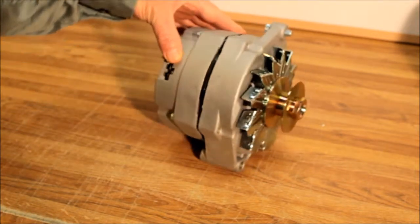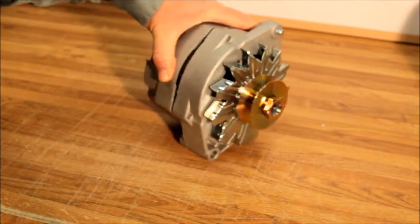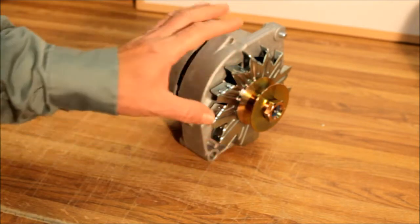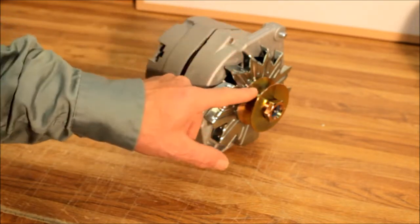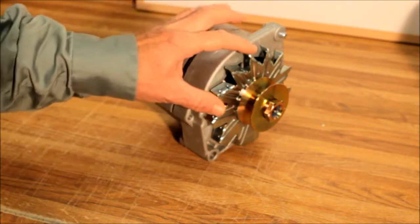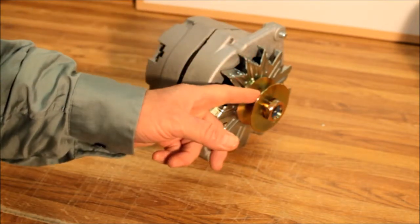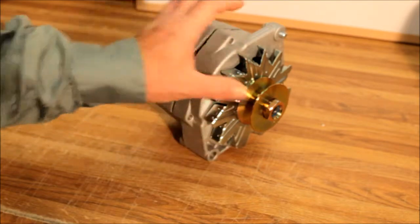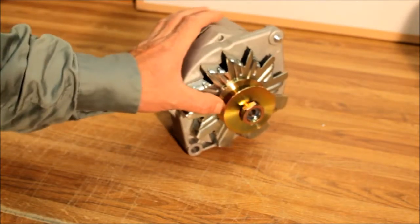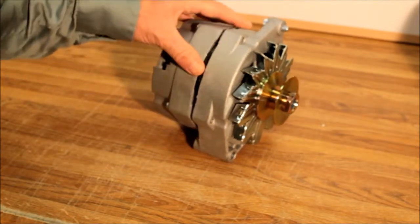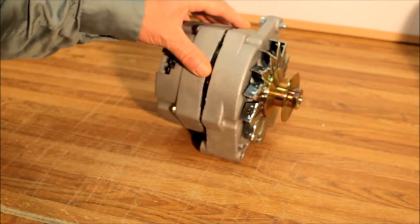Now this one in particular has our A203 pulley. This is the 5/8 to 3/4 inch wide. These alternators standard come with the 3/8 wide automotive belt, but you can order them with the A202 pulley, which is a half-inch wide V-belt, or the A203 pulley, which is the 3/4 inch, 5/8 to 3/4 wide V-belt. This one's going on an old Dodge or something like that that has the wider belt on it.